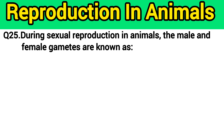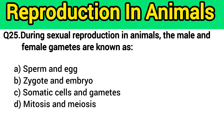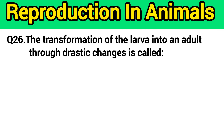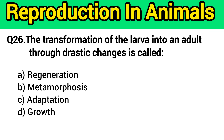Question number 25: During sexual reproduction in animals, the male and female gametes are known as? The right answer is option A — sperm and egg. Question number 26: The transformation of the larva into an adult through drastic changes is called? The right answer is option B — metamorphosis.